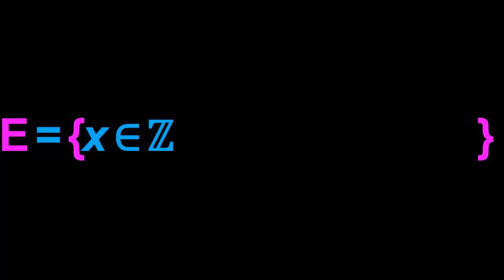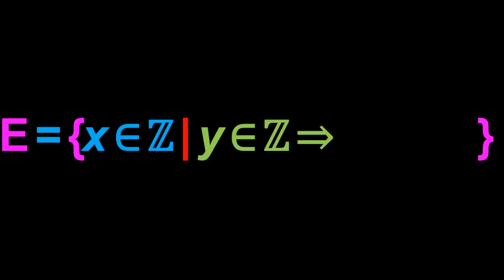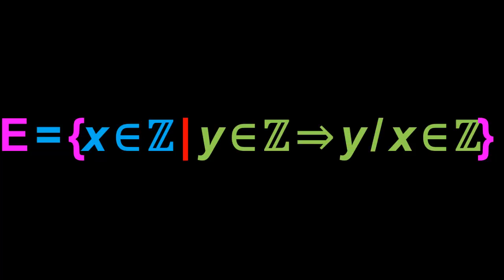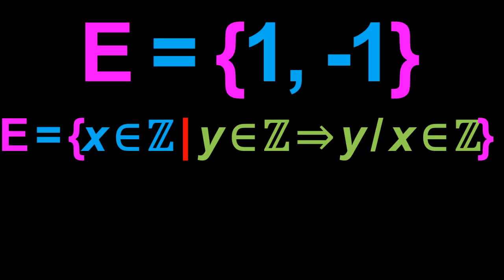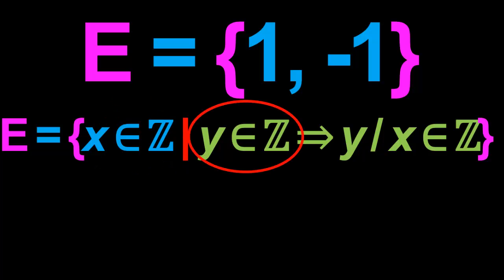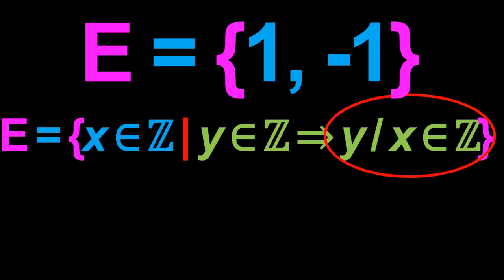Here's another example — let's see if you can figure out what the set E is. E is the set of integers x which satisfy the property that if y is also an integer, then y divided by x is also an integer. Well, the set E is actually just going to consist of two elements: 1 and negative 1. This is because 1 and negative 1 are the only integers x such that for any integer y, y divided by x is also an integer — in other words, they are the only two numbers by which every integer y is divisible.